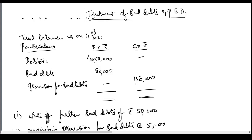In this video we learn about treatment of bad debts and also the treatment of provision for bad debts in final accounts. We'll do some problems. The trial balance as on 31st March 2021 is given: debtors with a debit balance of 40 lakh 50,000 rupees, bad debts 80,000 rupees, and provision for bad debts 1 lakh 50,000. The 80,000 already given as bad debts means the entry for that amount has already been passed, and the debtors figure is after subtracting that 80,000. The provision of 1,50,000 has been made to meet such losses.